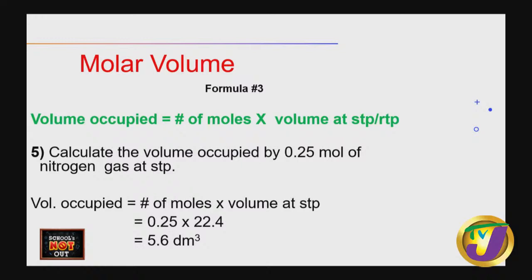Calculate the volume occupied by 0.25 mol of nitrogen gas at STP. Volume occupied = n × volume at STP = 0.25 × 22.4 = 5.6 dm³. All you are doing is plugging values into the formula. Remember: first write the formula that gives you what you want.